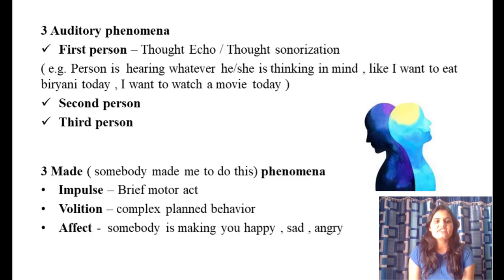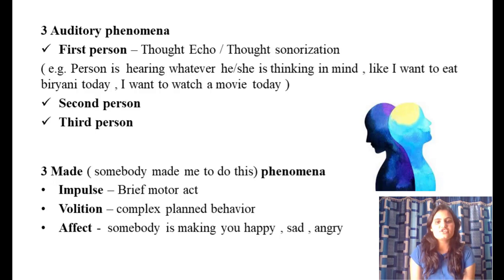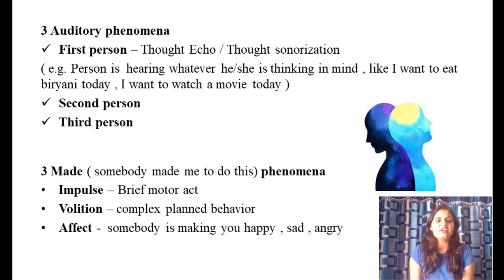The three auditory phenomena refer to three types of auditory hallucinations: first-person, second-person, and third-person. First-person involves thought echo or sonorization — the person hears their own thoughts aloud. For example, if I am thinking 'I want to eat biryani today,' I would actually hear that thought as an auditory hallucination.